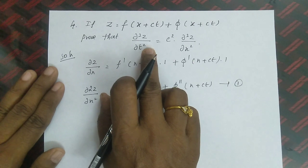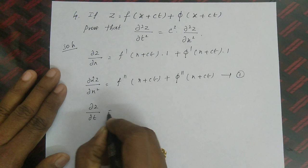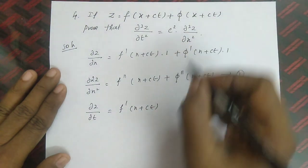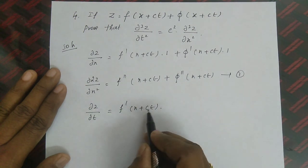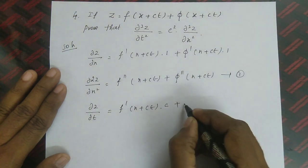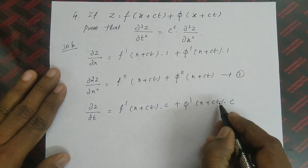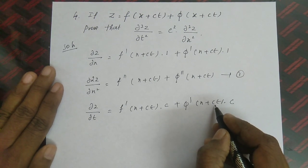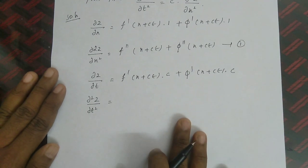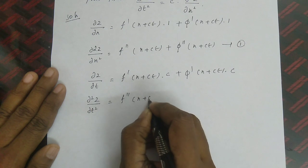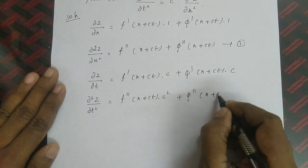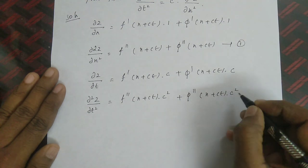Next, find ∂z/∂t: differentiating with respect to t (treating x as constant), ct gives c, so ∂z/∂t = f'(x + ct)·c + φ'(x - ct)·c. Differentiating again with respect to t: ∂²z/∂t² = f''(x + ct)·c² + φ''(x - ct)·c².